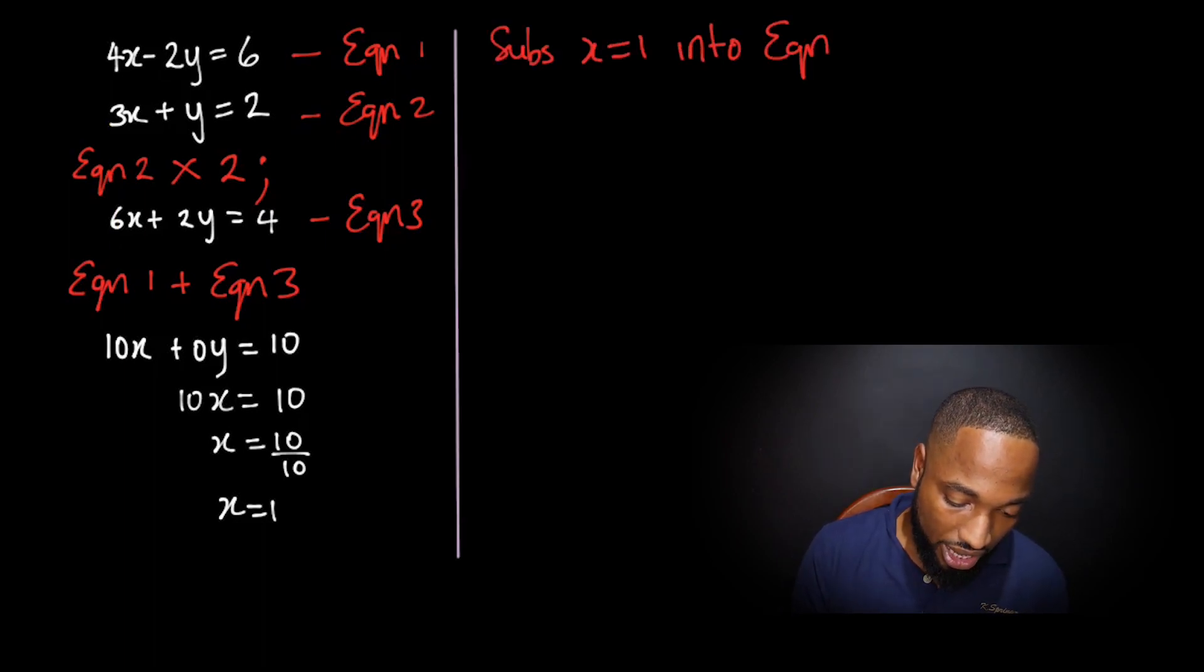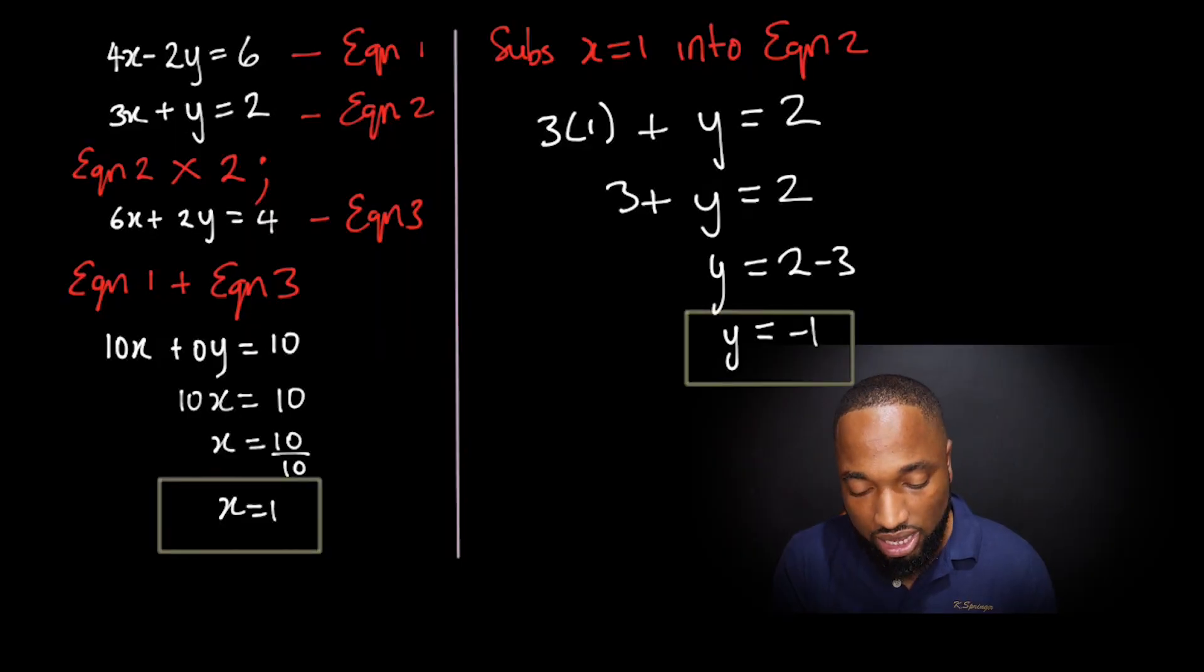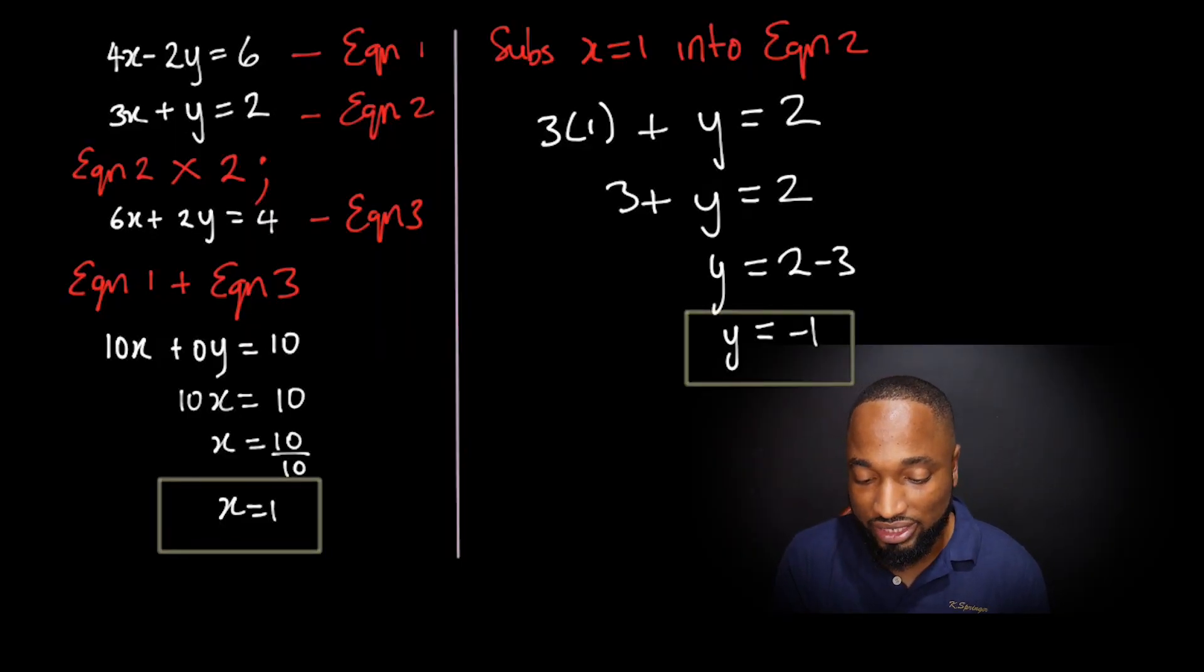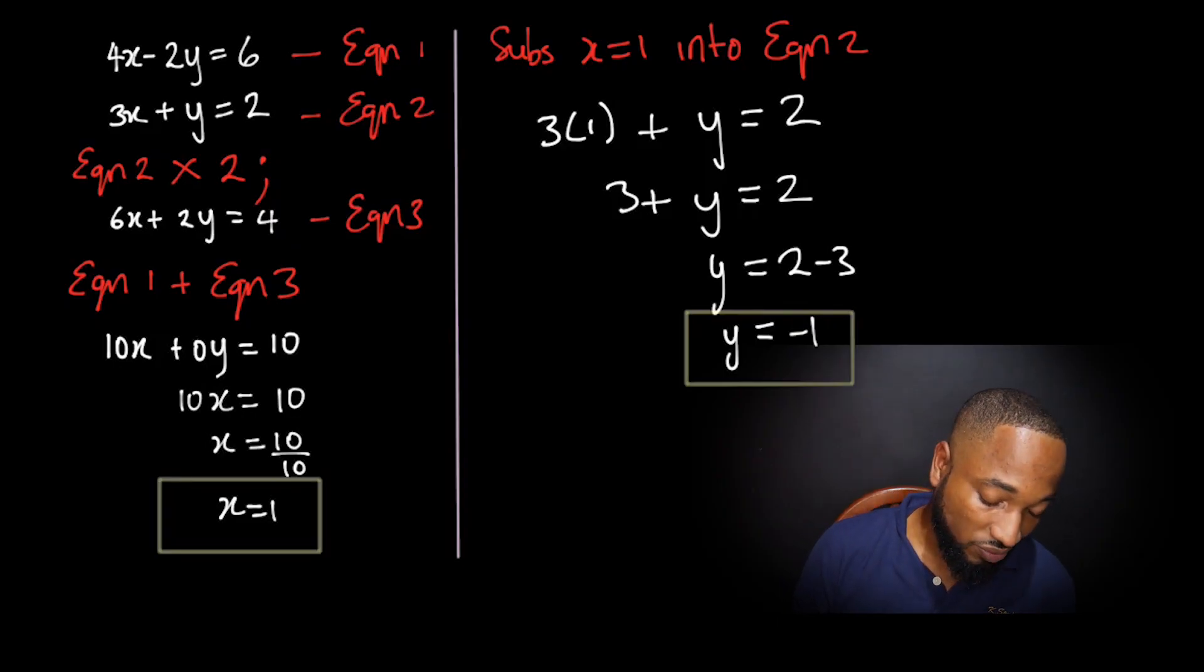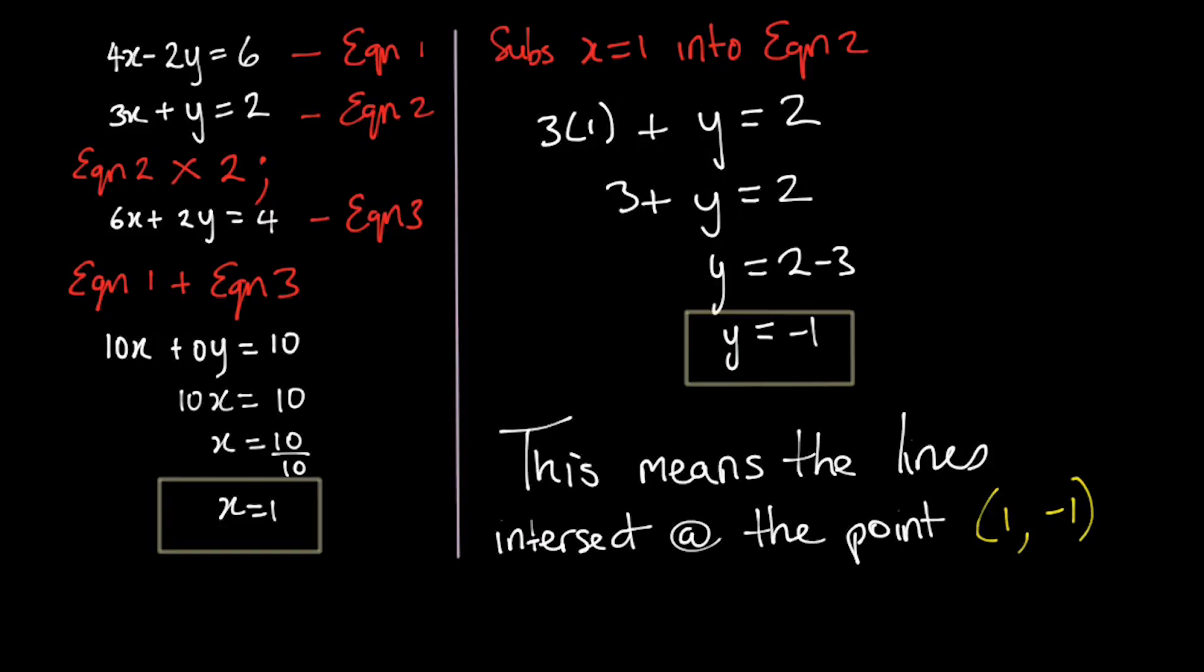X works out to be 1. I substitute x into equation 2—just substitute that value of x as 1 from what we just got, and y is negative 1. Obviously now the point of intersection between these two is going to be x equals 1 and y equals negative 1.